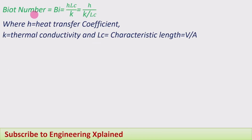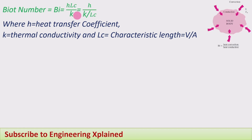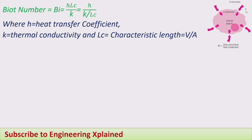Firstly, we will take the Biot number. The Biot number is given by H·Lc / K, which can also be written as H / (K / Lc), where H is the heat transfer coefficient, K is the thermal conductivity, and Lc is the characteristic length given by the volume-to-area ratio. For a solid body, conduction heat transfer occurs within the body and convection occurs between the body and the surrounding fluid.